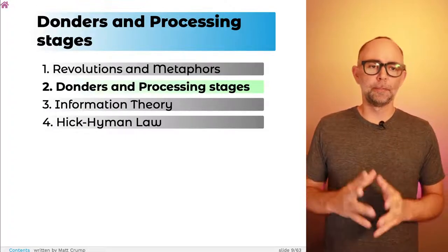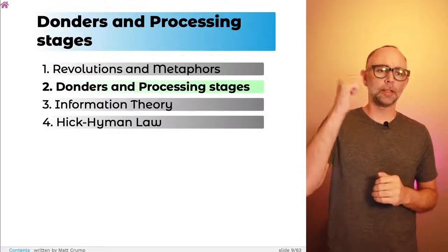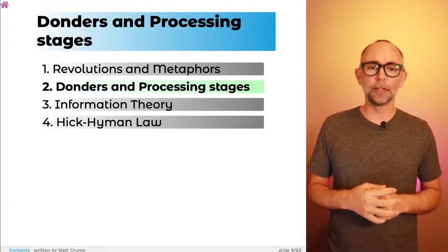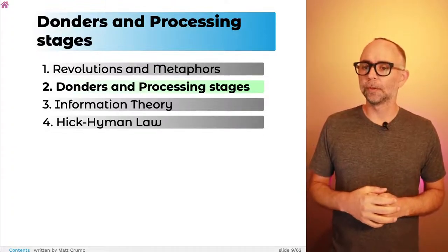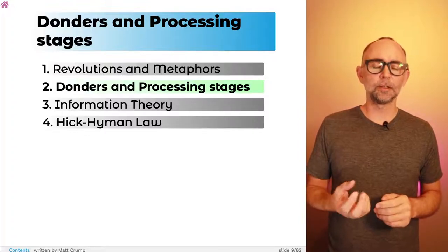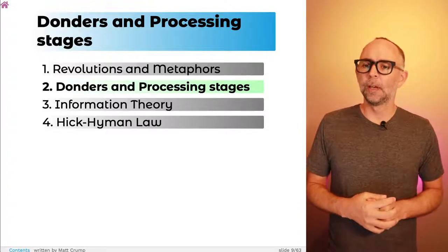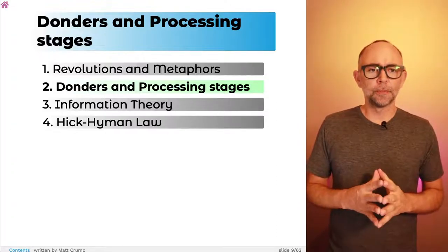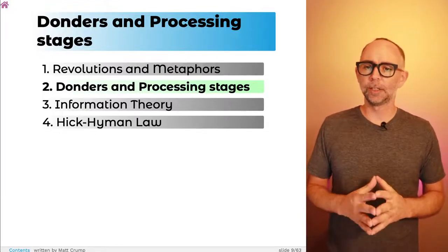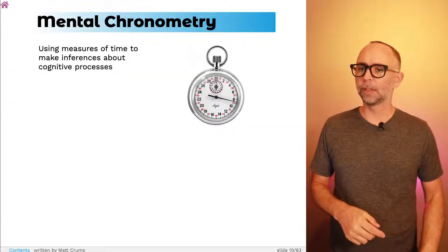In the main part of this lecture, we're going to go back in time to the industrial revolution and look at a few different proposals, focusing specifically on Donders — a Dutch ophthalmologist — and some of the research he did that paved the way for thinking about information processing stages in cognition. Let's jump in.